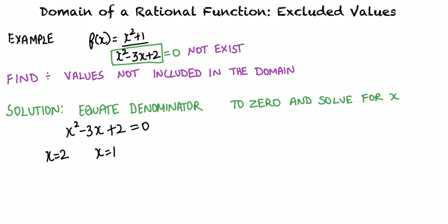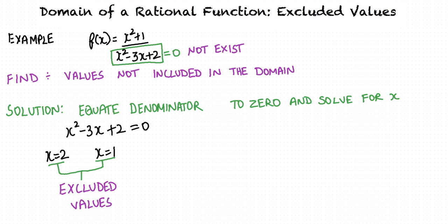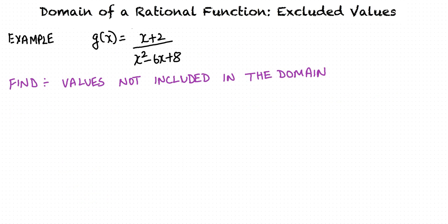When x equals 2 and x equals 1, the function ceases to exist, and hence 2 and 1 are the excluded values of the function not included in the domain.